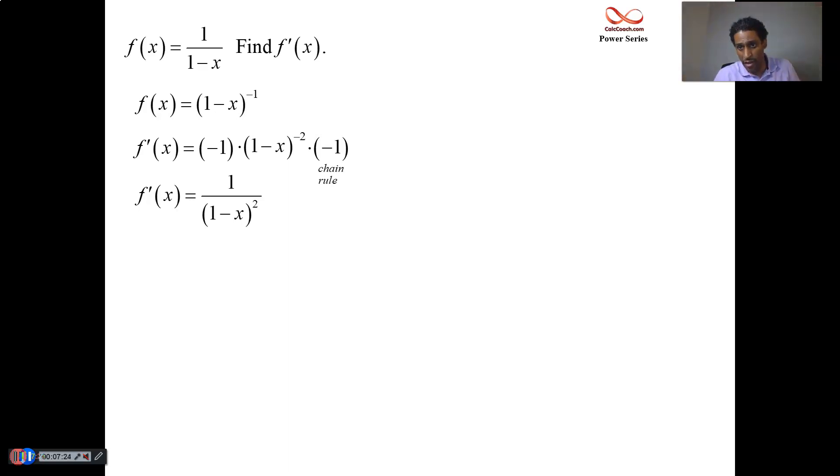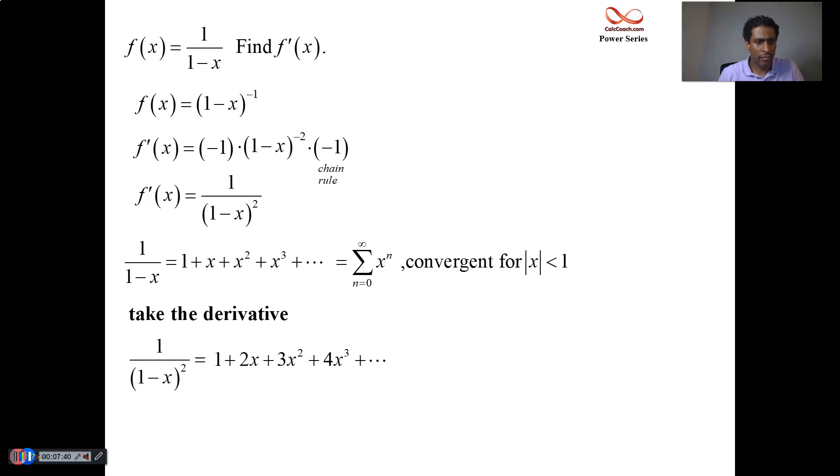Now we need the derivative of the terms and the derivative of the summation. So 1 plus x plus x squared plus x cubed. What is the derivative there? It's going to be 0 plus 1 plus 2x plus 3x squared. What about the summation? It's going to be n times x to the n minus 1. Make sure it starts at 1, though.